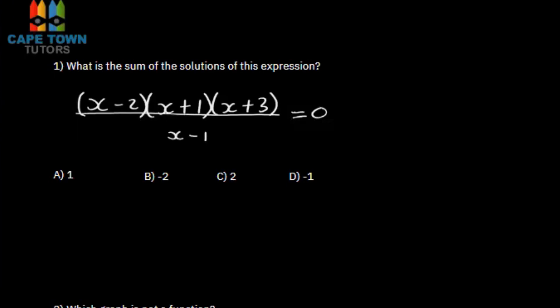You cannot just go and find the solutions. You need to first find the solutions of x, and then find the sum of them. To find the solution of x, we need to get rid of the denominator, which is x minus 1, because we're unable to say x equals 2, x equals negative 1, and x equals negative 3.